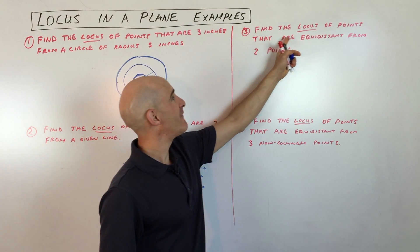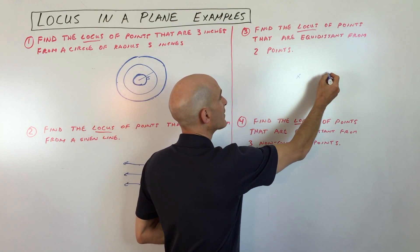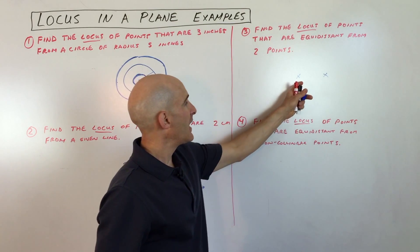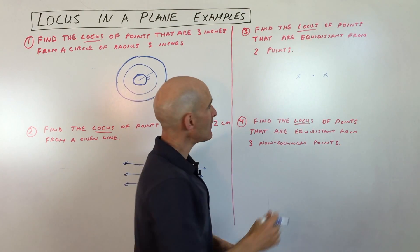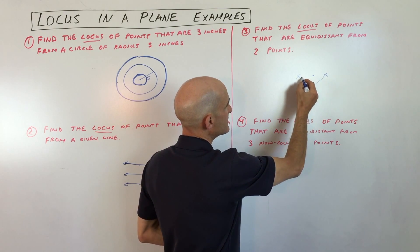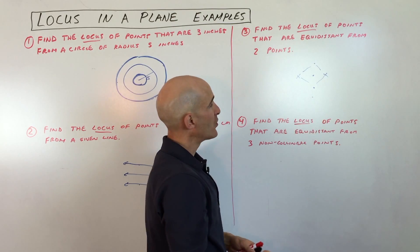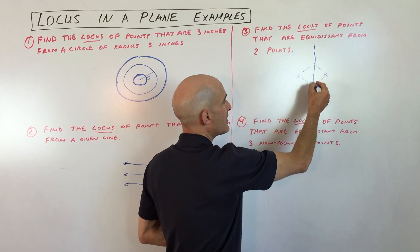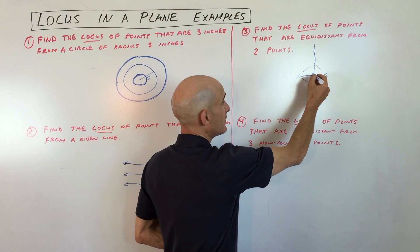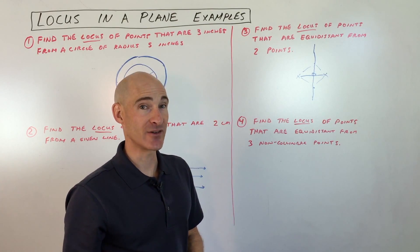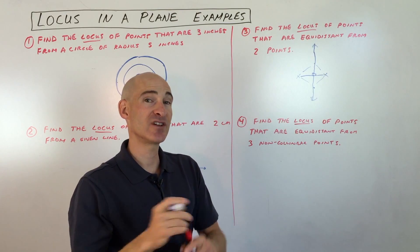Find the locus of points that are equidistant from two points. Draw those two points. Equidistant — well, there's a point right at the midpoint. But what about a point above? That distance and that distance are the same. What about over here? Same. What you realize is there's a line going through the midpoint, perpendicular to the segment connecting the two points. That's the perpendicular bisector of the segment that connects the two given points — and that's the solution.